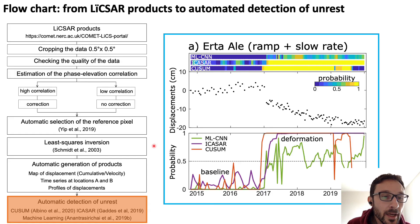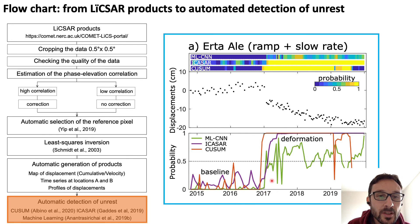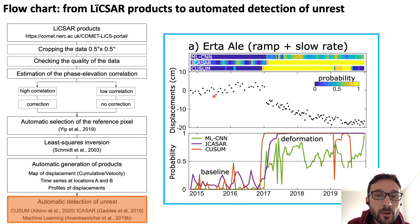We also perform automatic detection of unrest using different algorithms: QSUM, ICASA, and machine learning. I don't have time to go into detail on the techniques — you can read the paper if you want to. Here is an example for the Erta Ali case with ground displacement during an intrusion in 2017. You can see that all the algorithms show the probability of deformation increasing around that date, so we are quite confident we can use these techniques to automatically detect ground unrest.